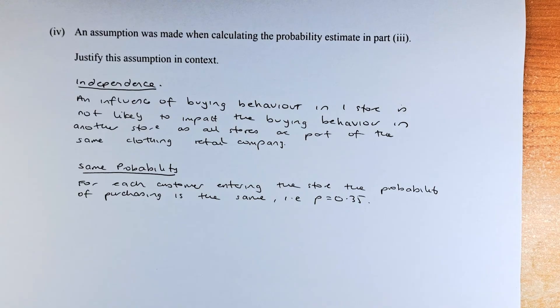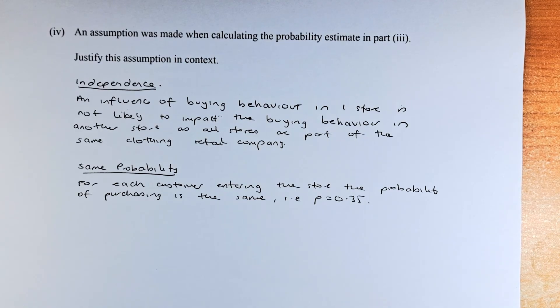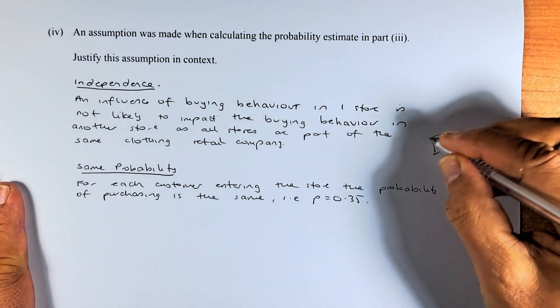The second assumption we made is that the probability is constant throughout. So for each customer entering the store, the probability of purchasing is always the same. That is probability equal to 0.35. If you can give me 2 of these examples, you will get excellence in this paper.